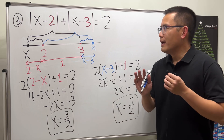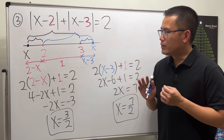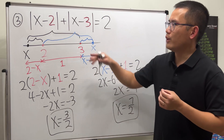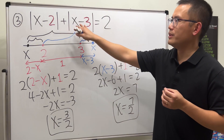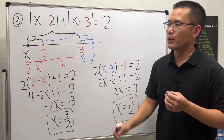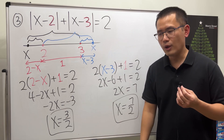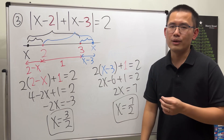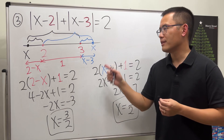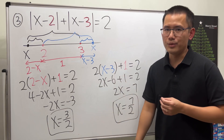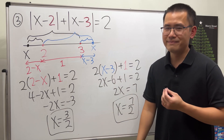By the way, I actually don't know how to handle three absolute values in a nice geometric way. If you do know, let me know — I don't think the picture approach works anymore, unfortunately. Thank you.